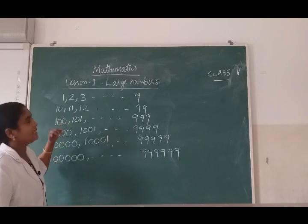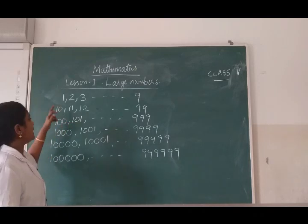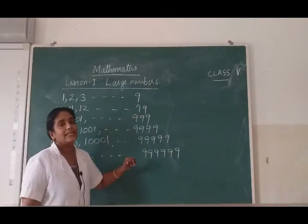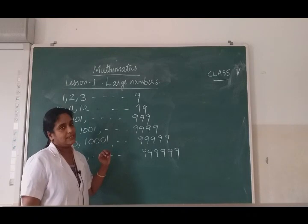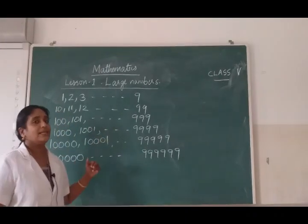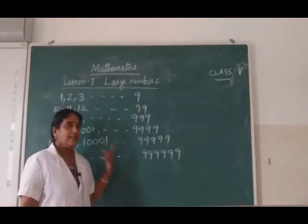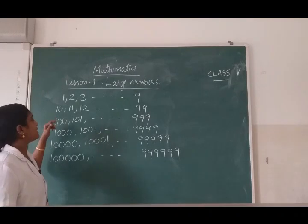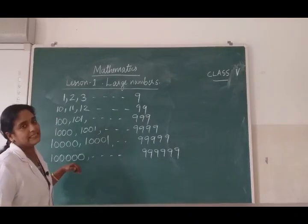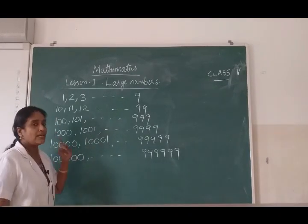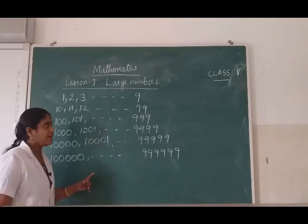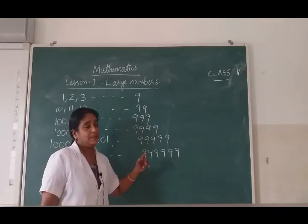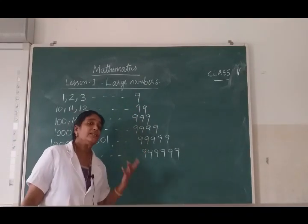So 9 is the greatest 1 digit number and 10 is the smallest 2 digit number. When you write 2 digit numbers — 10, 11, 12 etc. — up to 99 we get. After 99, the next number is 100. 100 has 3 digits, so 100 is the smallest 3 digit number and 99 is the greatest 2 digit number.